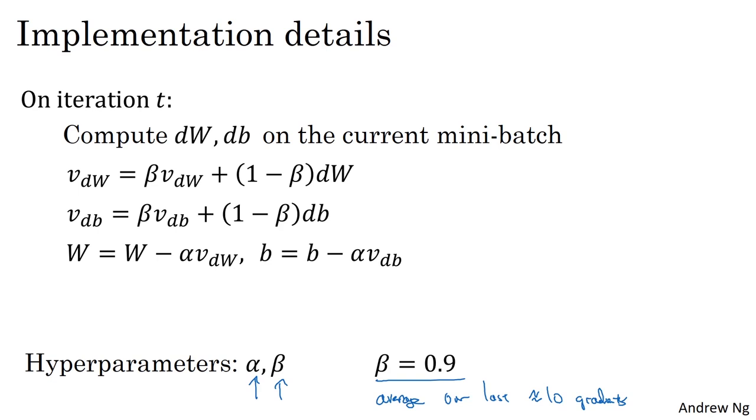And how about bias correction? So do you want to take vdW and vdb and divide it by 1 minus beta to the t? In practice, people don't usually do this because after just 10 iterations, your moving average will have warmed up and there's no longer a biased estimate. So in practice, I don't really see people bothering with bias correction when implementing gradient descent with momentum. And of course, this process is initialized with vdW equals 0. Note that this is a matrix of zeros with the same dimension as dW, which is the same dimension as W. And vdb is also initialized to a vector of 0, so the same dimension as db, which in turn has the same dimension as b.